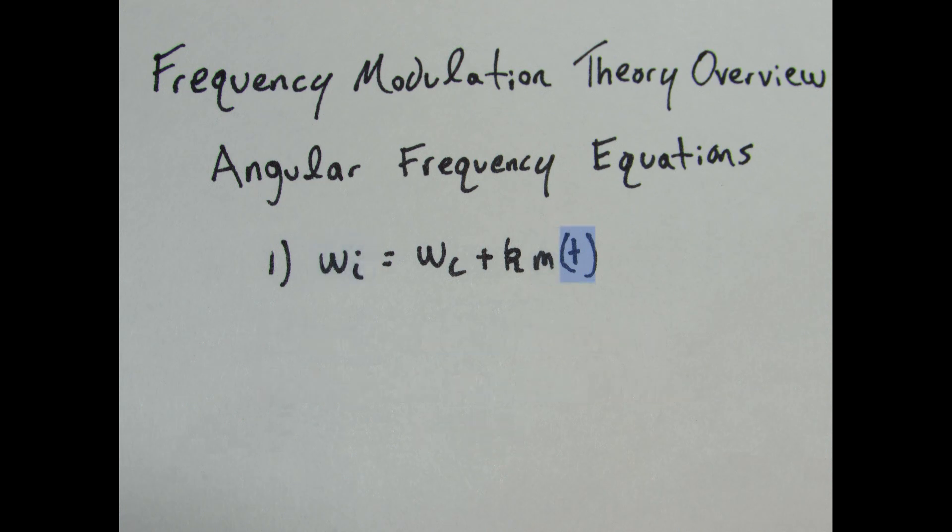Note that MT is a function of time. This message signal needs to be a periodic waveform, but can take the form of a sine wave, square wave, or anything that's periodic.